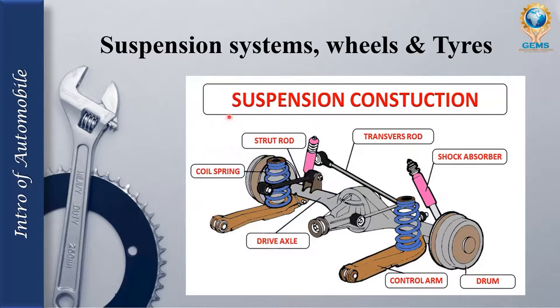In the suspension systems chapter, we will look at the suspension construction — including coil springs, drive axle, control arm, drum, shock absorber, transverse rod, and strut rod. We will also see wheels and tires — two-wheelers, three-wheelers, four-wheelers — and learn about tires as well.